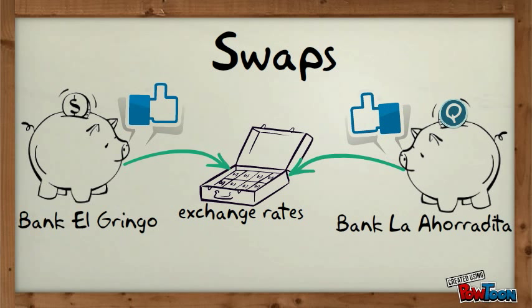In consequence, importers prefer to buy dollars from Bank La Horradita instead of the regular market, so this bank is able to purchase more dollars from Bank El Gringo at a better rate due to the swap agreement. Finally, Bank El Gringo has more Quetzales from the transaction, making profit out of it as well.